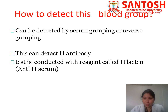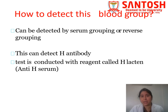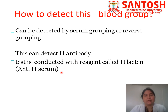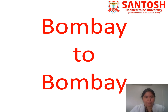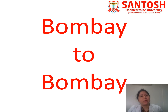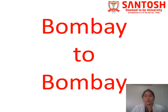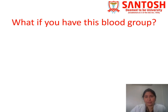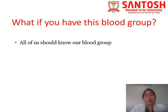Bombay blood group can be detected by serum grouping or reverse grouping — that is, identifying antibodies present in the serum. Anti-A, anti-B, and anti-H antibodies can be detected. Anti-H lectin or anti-H serums are now available commercially, which can be used to identify Bombay blood group. The most important thing to remember is Bombay to Bombay — a person with Bombay blood group can donate to and receive blood from only Bombay blood group individuals.